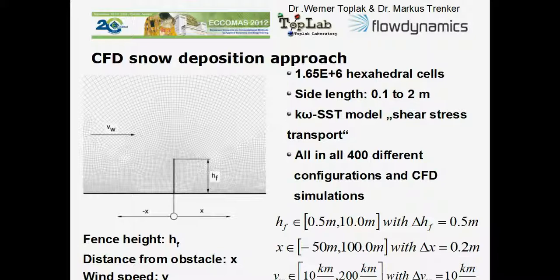The simulation area has been divided into 1.6 million cells, each with a length of 0.1 to 2 meters, and all physical differential equation systems must be solved for each cell — this is where very long calculation and processing times occur. 400 different configurations and scenarios have been simulated: obstacle heights from 0.5 to 10 meters in 0.5-meter steps, distance from the fence discretized in 0.2-meter steps, and wind speeds from 10 to 200 kilometers per hour in steps of 10 km/h.